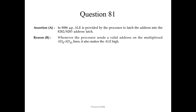Question 81. Assertion: in 8086 microprocessor, ALE (address latch enable) is provided by the processor to latch the address into the 8282/8283 address latch. From its name and function, it is clear that it is used to latch the address — correct statement. Whenever the processor sends a valid address on the multiplexed AD0 to AD15 lines, it also makes ALE high. This is also correct and gives the explanation for the assertion. So we choose option 1.